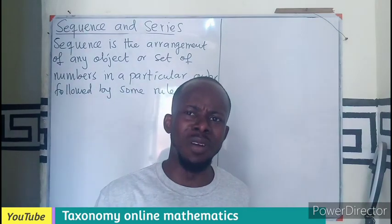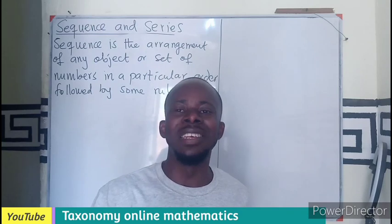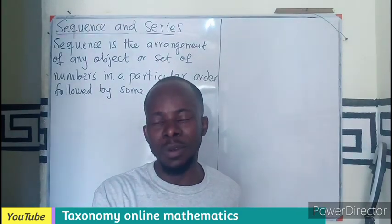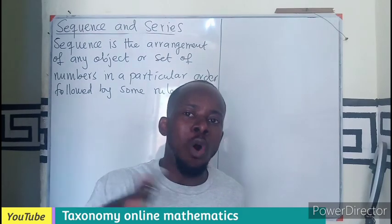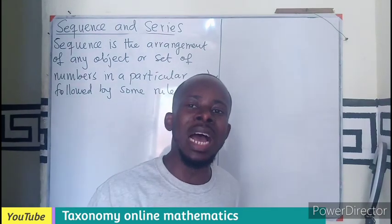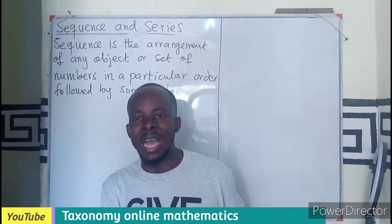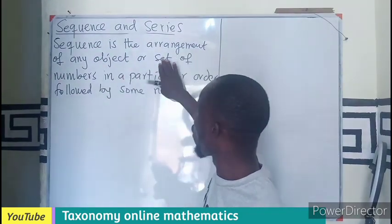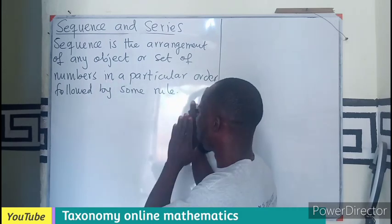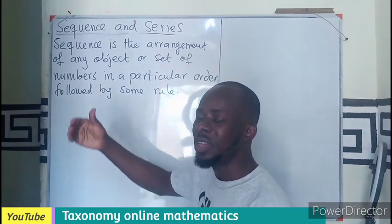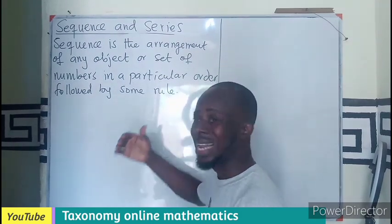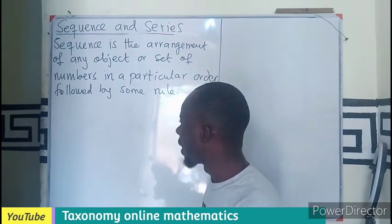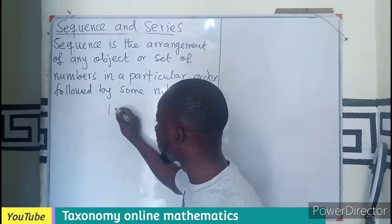In mathematics, we refer to a sequence as just an arrangement of numbers or objects which are in a particular order, and in this order there should be an observed rule. So it is just an arrangement of any objects or set of numbers that are in a particular order, which is always followed by a certain rule.